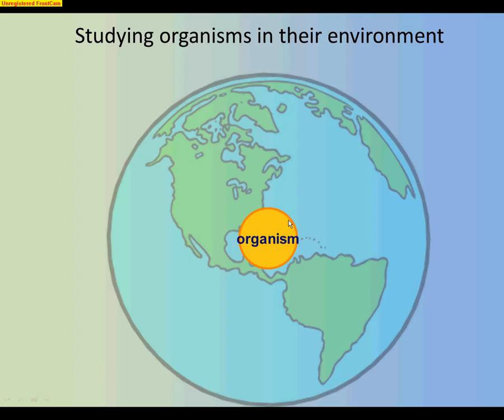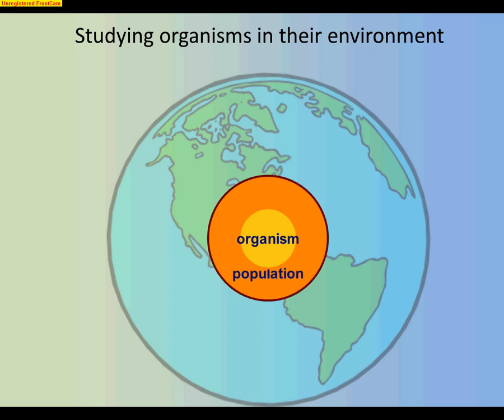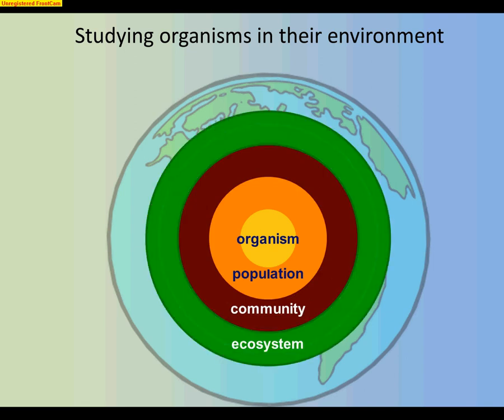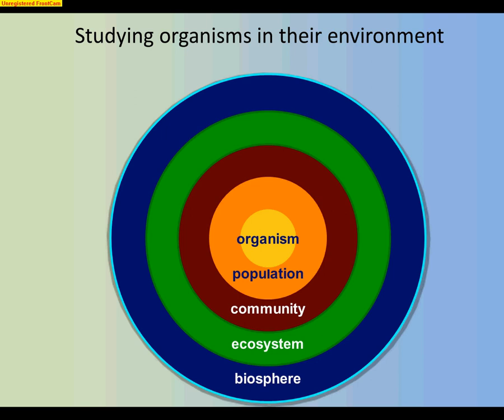Let's look at a way of organizing information in ecology. We start at the simplest level with an organism. You know we can go down into organ systems, organs, tissues, and cells — we'll get there eventually. But for our starting point, let's begin with an organism. Many organisms make a population. Several populations make a community. Several communities make an ecosystem. And several ecosystems make a biosphere. We're going to focus in on ecosystems, communities, and populations — those three.